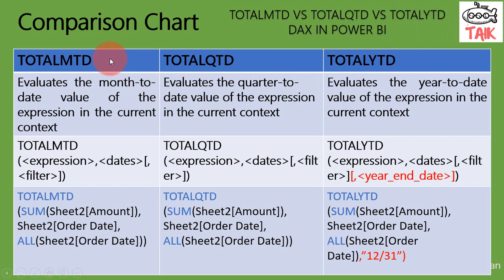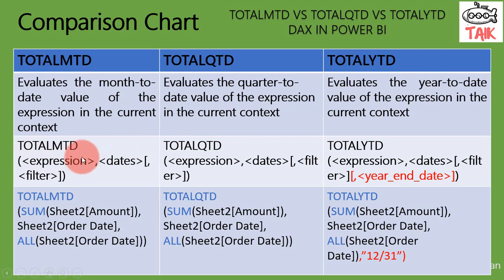Basically, Total MTD will evaluate the formula for the whole month in the current context. QTD will evaluate the formula for the whole quarter, and Total YTD will evaluate the expressions for the whole year — or until the end of the year with a user-defined date.